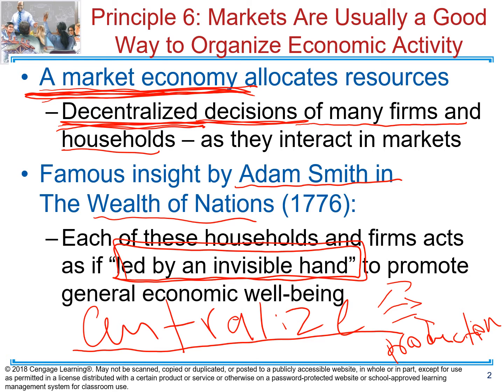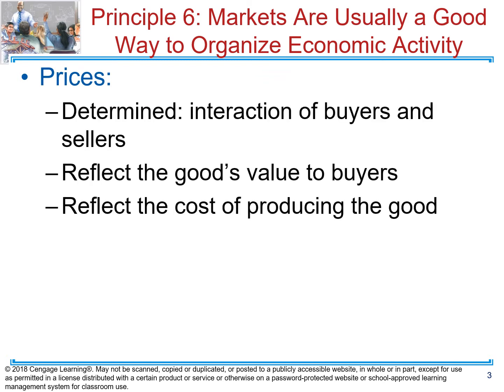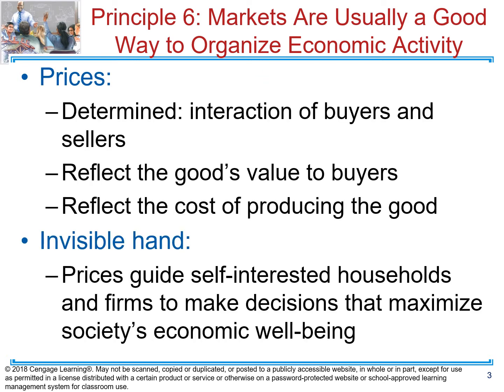The invisible hand means that those decisions — what to produce, how to produce, at what price to sell it — are actually going to be done by the interaction of many buyers and sellers. Whatever value buyers and sellers place on a product, then that product is going to be produced in our society. For example, why did Steve Jobs many years ago decide to produce the iPhone? The answer is because he wanted to make money, and that is correct.